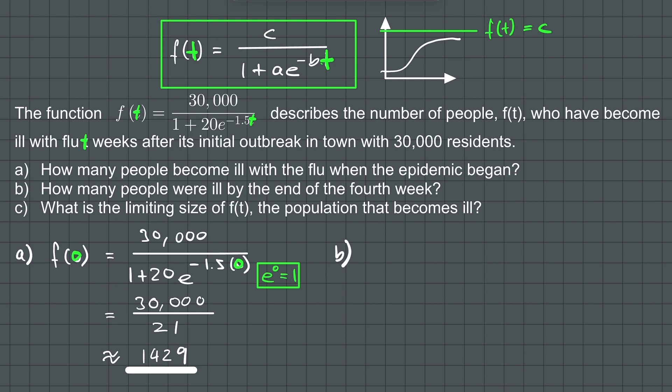By plugging in 4 for t, we get f(4) equals 30,000 over 1 plus 20 times e raised to the power of negative 1.5 times 4.